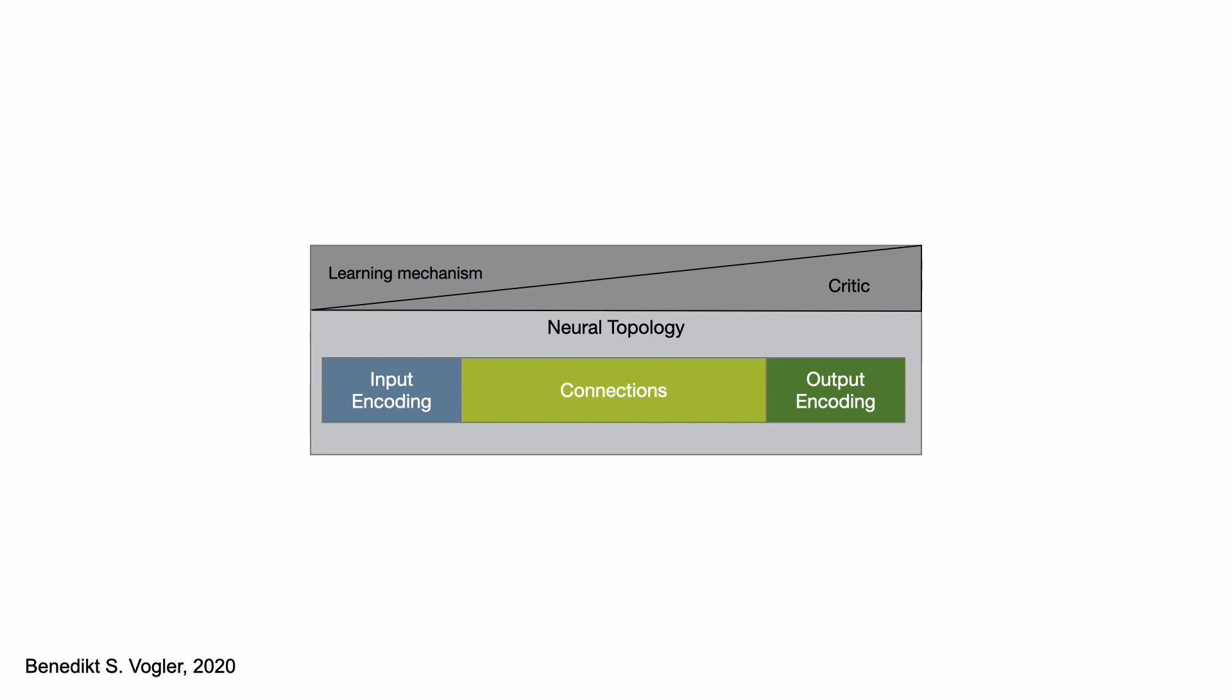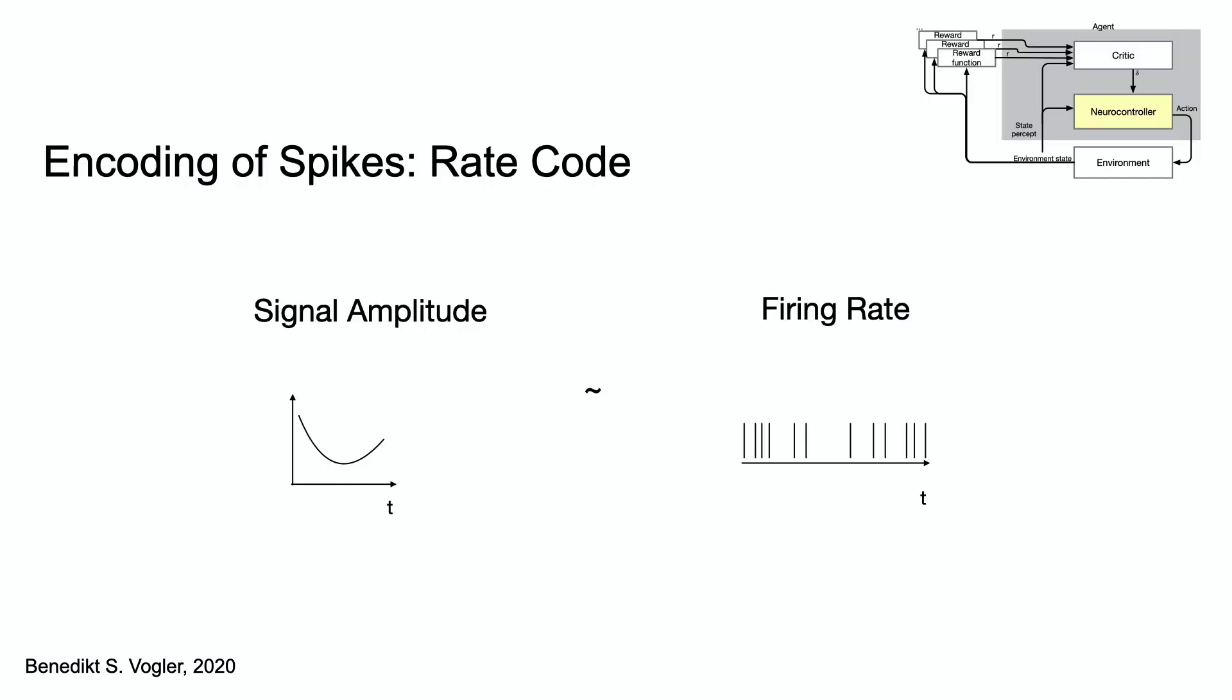connections and output encoding. One way of encoding is using the rate code. The signal amplitude is translated to a firing rate, where a high signal amplitude means a high firing rate, and a low signal means a low firing rate.